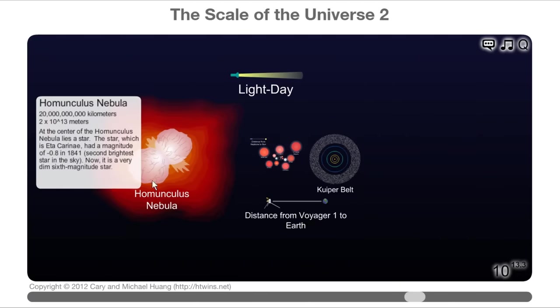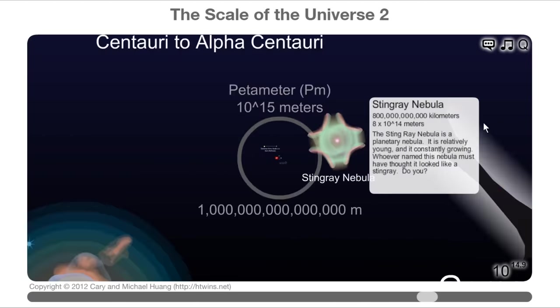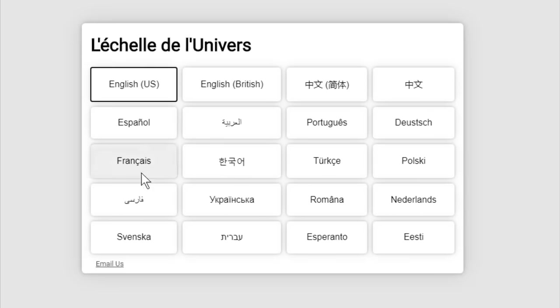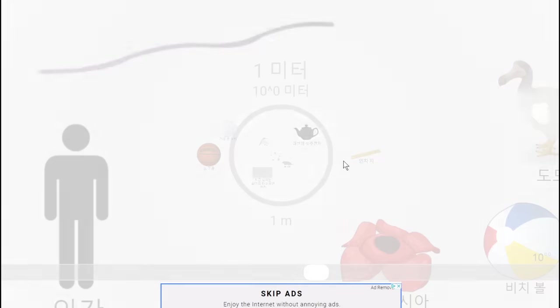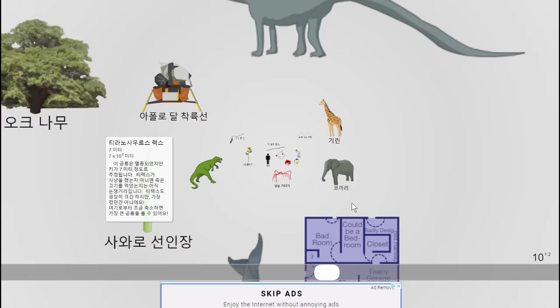Next, with the help of dozens of generous volunteers who reached out via email, we were able to translate the Scale of the Universe into 17 other languages, which made it more accessible to people all over the world.